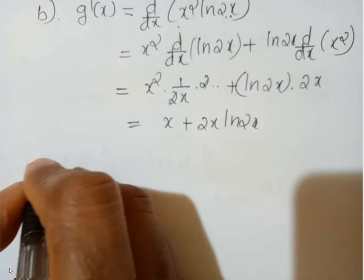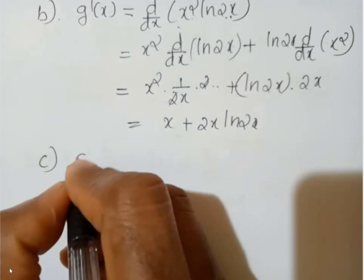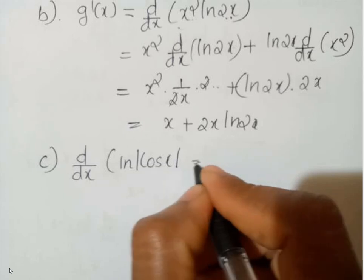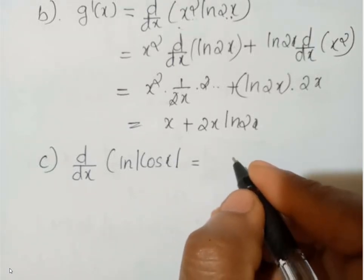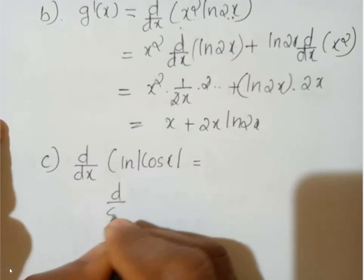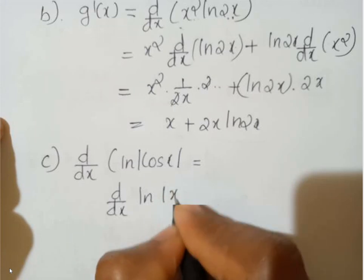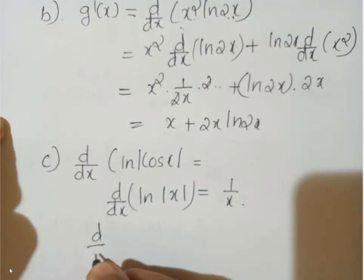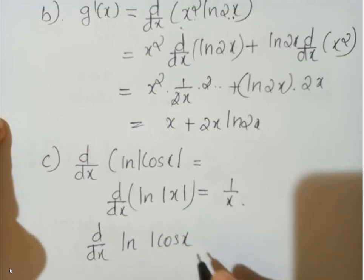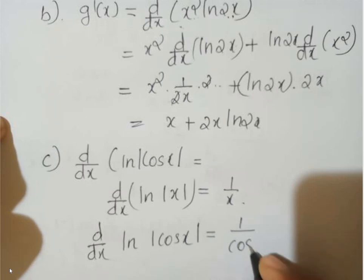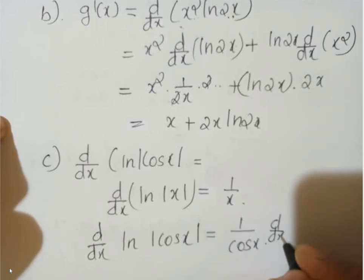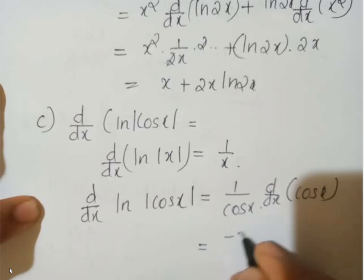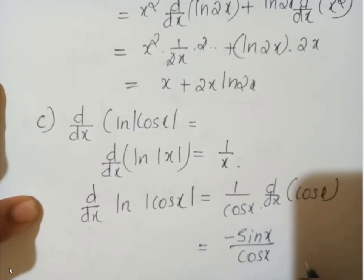The last one: d/dx of ln|cos x|. You know that d/dx of ln|x| = 1/x. So d/dx of ln|cos x| = 1/cos x · d/dx of cos x, which equals −sin x / cos x, and that equals −tan x.